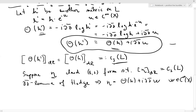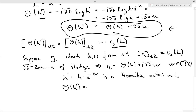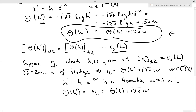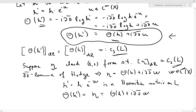By the game we just played, H′ = H · e^{−W} is a Hermitian metric on L such that θ(H′) = θ(H) + i∂∂̄W = η. So it's almost as if there is a one-to-one correspondence between representatives of the first Chern class and metrics on the line bundle — this is almost true, meaning up to a constant. Up to a constant, these things, due to Hodge theory, are in one-to-one correspondence.